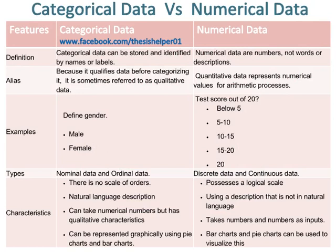Because it qualifies data before categorizing it, categorical data is sometimes referred to as qualitative data, whereas quantitative data represents numerical values for arithmetic processes.